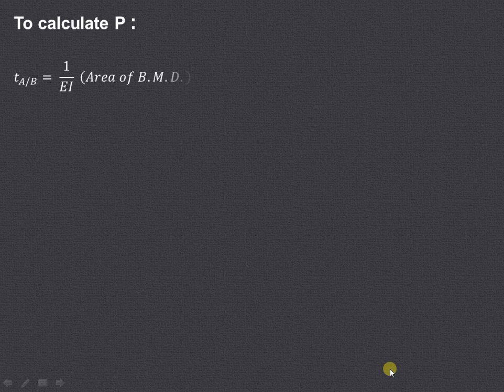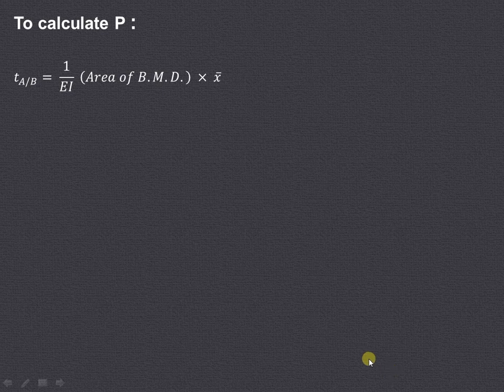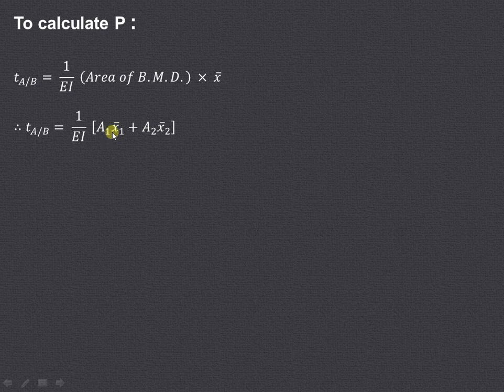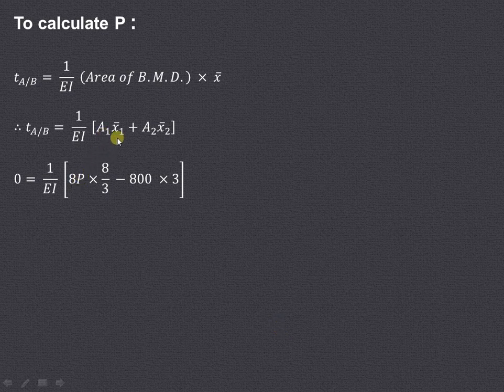So using this we can now apply the theorem of the moment area method. So 1 upon EI times area of bending moment diagram multiplied by X bar. So there are 2 areas: A₁X₁ bar plus A₂X₂ bar that we will have to take into consideration. So area A₁ is 8P and X₁ bar is 8 upon 3. Area A₂ is minus 800 and X₂ bar is 3.